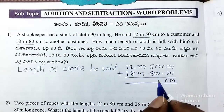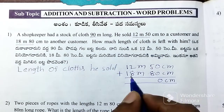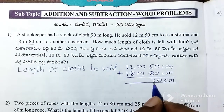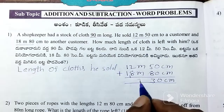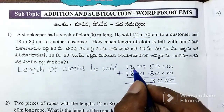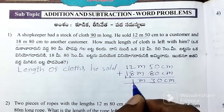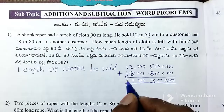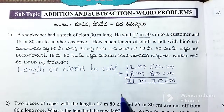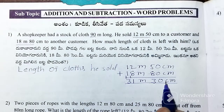Adding the centimeters: 0 plus 0 is 0; 5 plus 8 is 13. Then the meters: 8 plus 2 is 10, plus 1 carry is 11. And 3. That gives 31 meters, 30 centimeters.